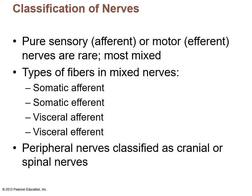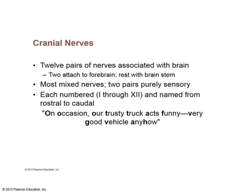Classification of nerves: pure sensory afferent or pure motor efferent nerves are rare — most nerves are mixed, having somatic afferent, somatic efferent, visceral afferent, and visceral efferent fibers. Peripheral nerves are classified into two groups: cranial and spinal nerves. There are 12 pairs of cranial nerves associated with the brain — two attached to the forebrain, the rest with the brain stem.